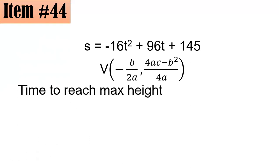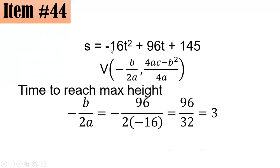With such, we are looking only for time, so we will be needing the negative b over 2a. Our a here is negative 16. Our b is 96. And our c is 145. By substitution, that's negative of 96 all over 2 times negative 16. Negative over negative is positive. And 2 times 16 is 32. And 96 over 32 gives 3. Therefore, the stone will attain its maximum height at 3 seconds.